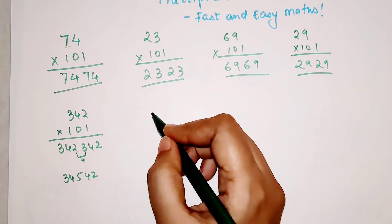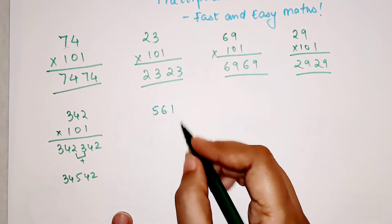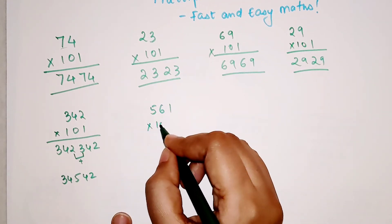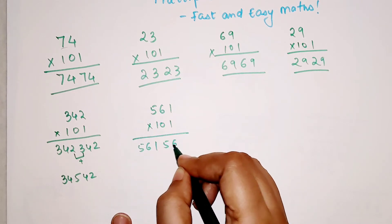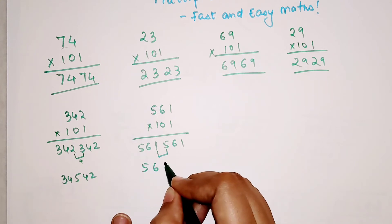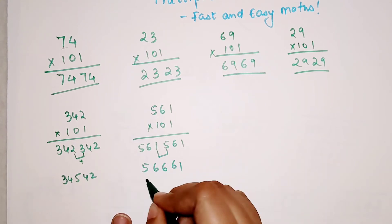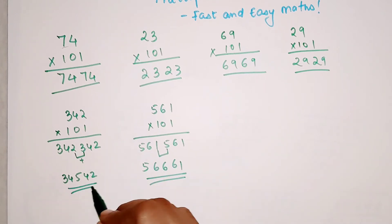Now very quickly let's do this one more time. 561 multiplied by 101. Again we will do 56156. And now we are going to add these 2. So we get 56661. I hope you are getting this particular trick.